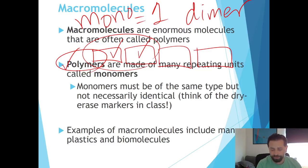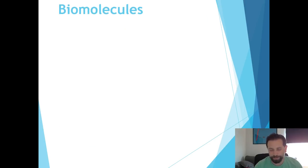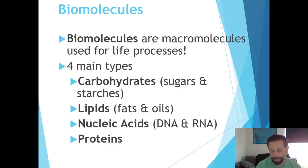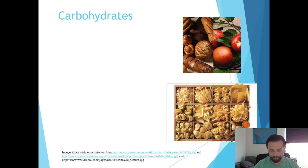Biomolecules are basically macromolecules used for life processes, and there are four main types that we're going to talk about. First one: carbohydrates or carbs. Next one's lipids—fats and oils. Next one's nucleic acids, and then lastly proteins. These are basically the things that make up carbohydrates, sugars and starches, what makes up lipids or fats and oils, and so on.